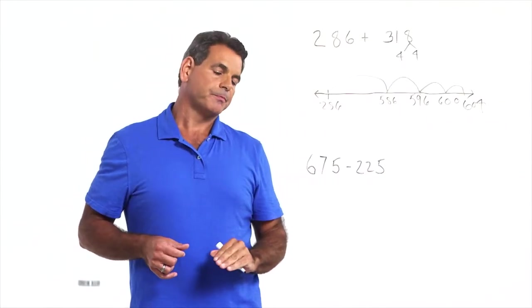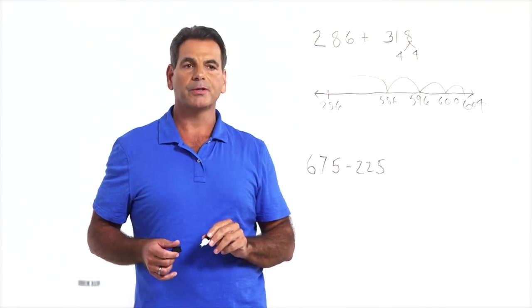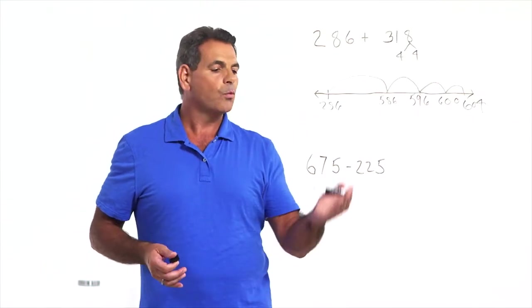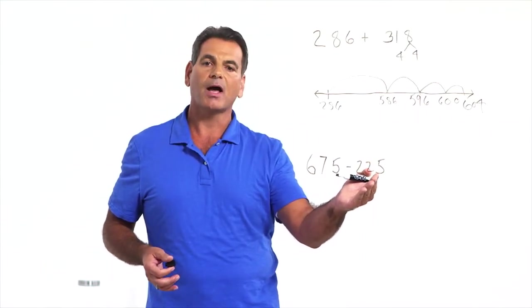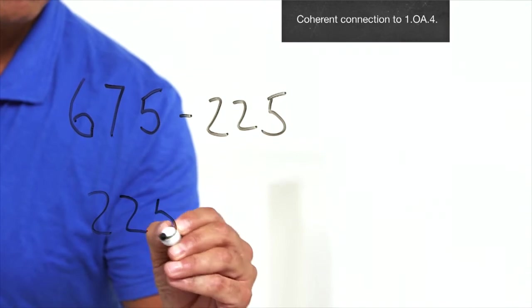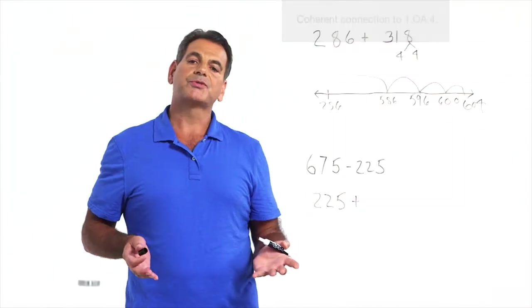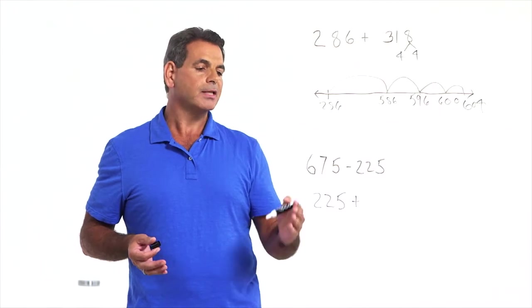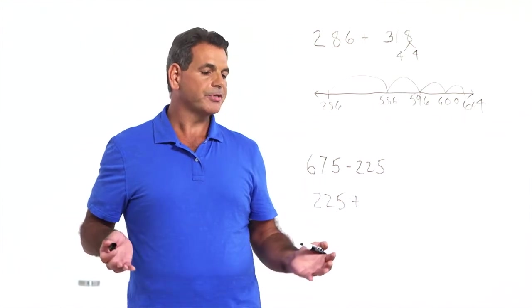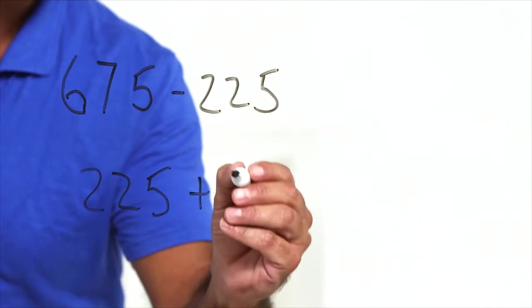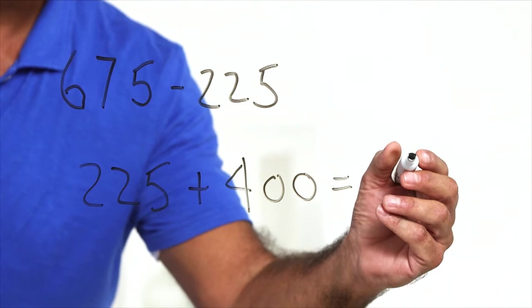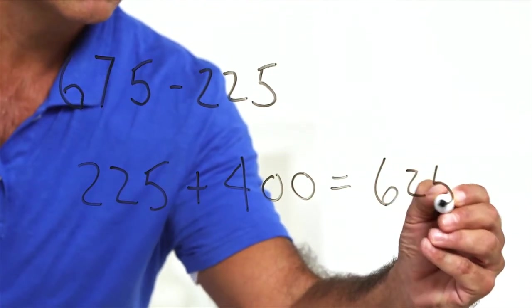Let's look at this subtraction problem. 675 minus 225. A nice strategy for subtraction is thinking about it as adding up. What number has to be added to 225 to get to 675? Let's think about it. Well, trying to stay with single digit addition, let's look at it by place value. Let's think about the hundreds. I'm in the two hundreds and I want to get to the six hundreds. Single digit fact. Two plus four is six. So let's start with 400 and see where we get.